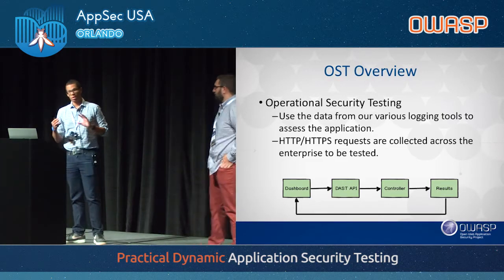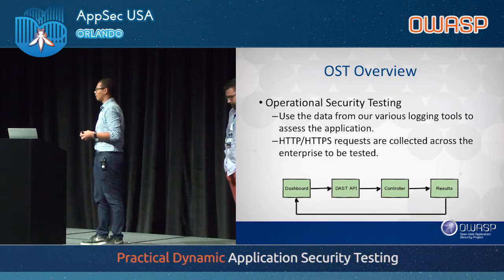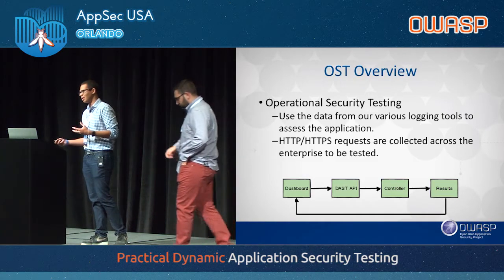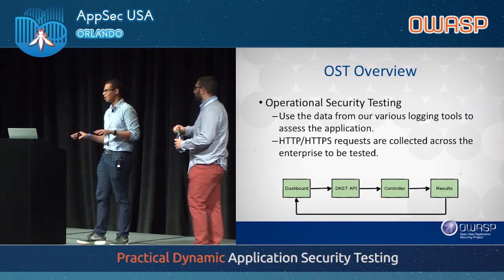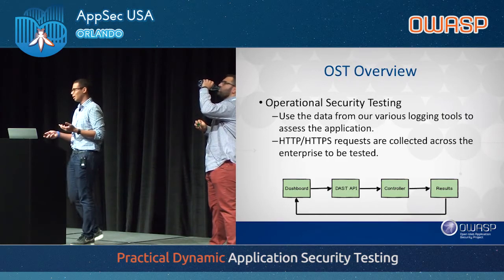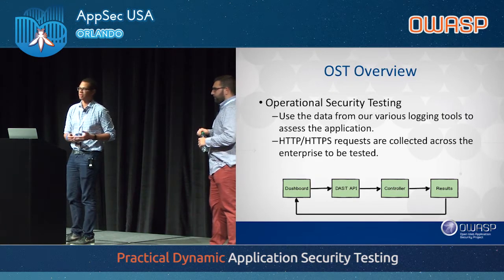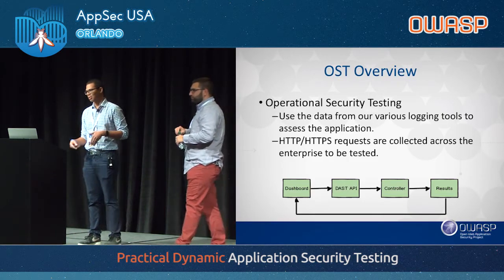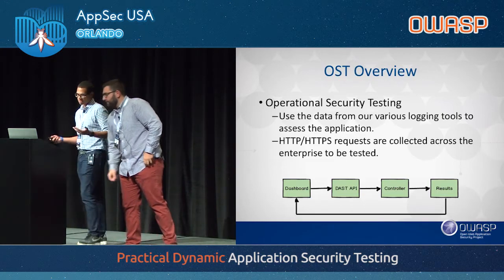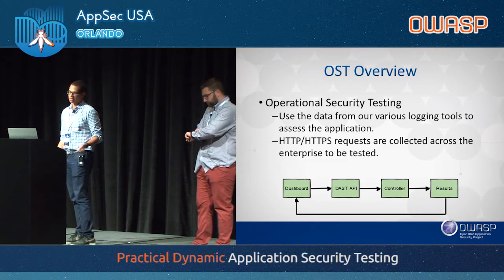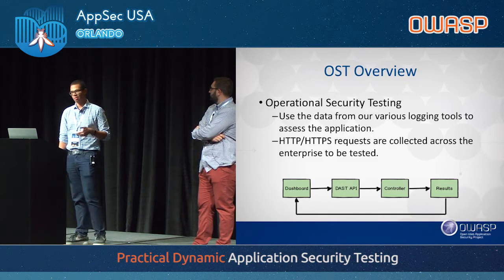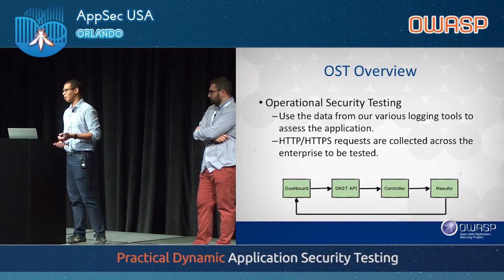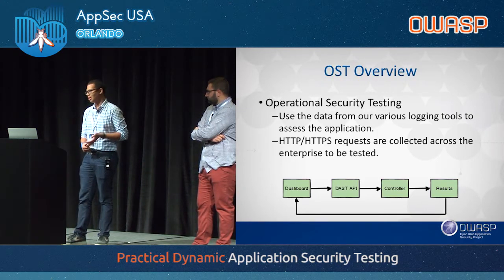The second method we're going to talk about is called Operational Security Testing — OST. In this method, we're going to leverage data retrieved from logging tools such as Splunk, TeaLeaf, SiteCatalyst — anything that can collect URLs — and perform quick passive scans against all that data. We'll hit all those URLs and scan all of them, because ultimately you want to know your security posture. The overview: you start with a security dashboard that has all information about your applications' current security posture — how many vulnerabilities, whether to initiate automated or manual web assessment.